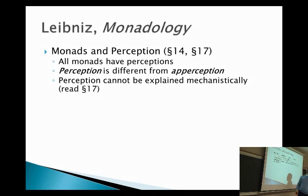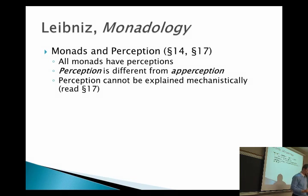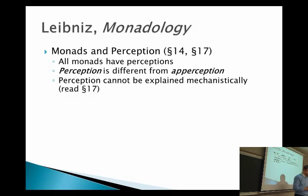In section 17, he gives this interesting example about touring a mill, related to thinking about consciousness. He says, 'We must confess that the perception, and what depends on it, is inexplicable in terms of mechanical reasons — that is, through shapes and motions. If we imagine that there is a machine whose structure makes it think, sense, and have perceptions, we could conceive it enlarged, keeping the same proportions, so that we could enter into it as one enters into a mill. Assuming that, inspecting its interior, we will only find parts that push one another, and we will never find anything to explain a perception. And so, we should seek perception in the simple substance and not in the composite or in the machine.'